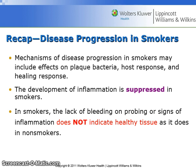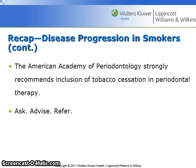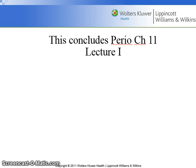Recap on disease progression in smokers: the mechanisms may include effects on plaque bacteria, host response, and healing response. The development of inflammation is suppressed in smokers, and a lack of bleeding on probing or signs of inflammation does not indicate healthy tissues. The American Academy of Periodontology strongly recommends inclusion of tobacco cessation in periodontal therapy using Ask-Advise-Refer. This concludes Perio Chapter 11, Lecture 1.